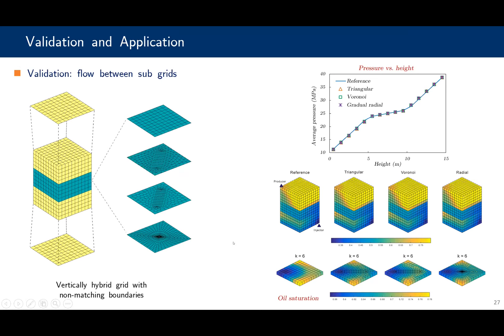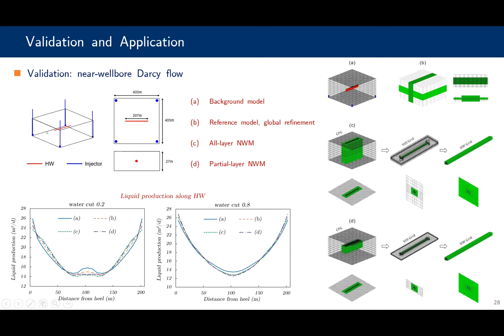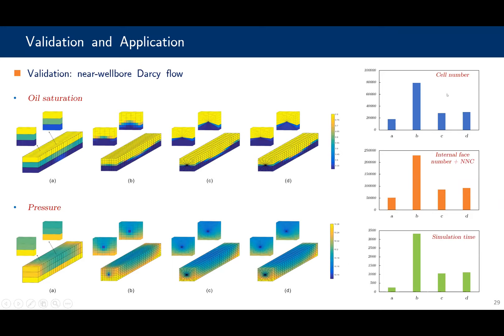Next is the near-wellbore flow. We model a box reservoir with four injectors and a centrally located horizontal well. We build four models: the background model, a reference global refinement grid which is selected as the reference model, and models C and D which are our models — C is our full-layer model and D is the partitioned layer model. We can see that the liquid production along the well matches well with the reference, and also for the oil saturation and pressure. In addition, the grid cell number, face number, and simulation time are much smaller than the reference grid.